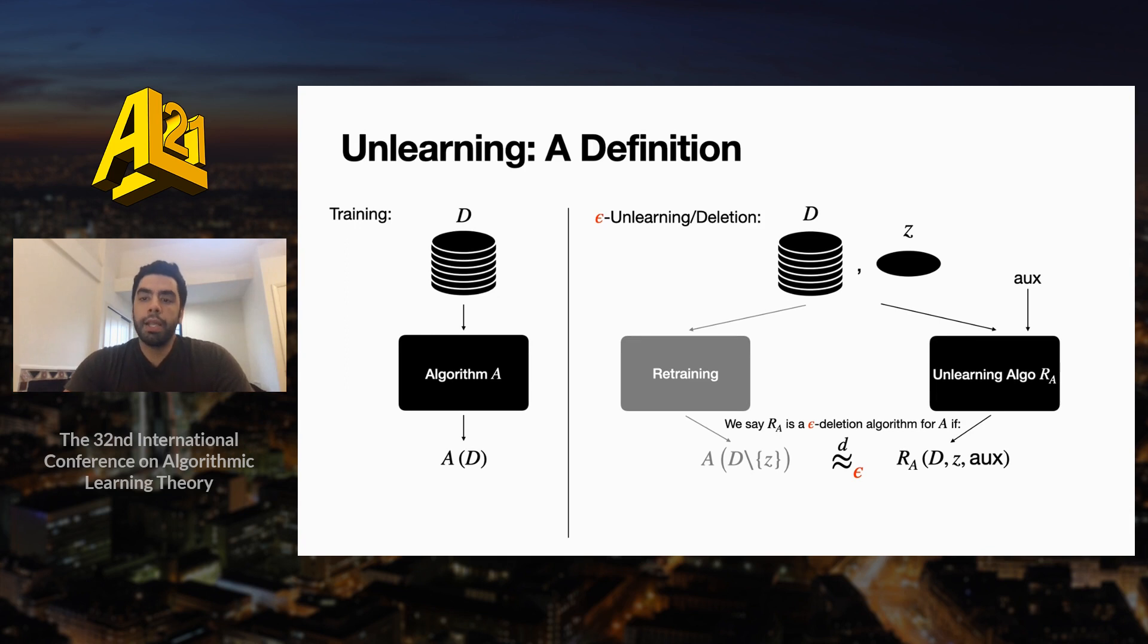We can further relax this definition and ask for epsilon unlearning, which requires that those two distributions—one is the output distribution of the deletion algorithm, and another is the output distribution of retraining—are epsilon close to each other in a differential privacy sense. This means that the distributions are within the multiplicative factor of e^epsilon of each other. Obviously the smaller the epsilon, the stronger our deletion guarantee will be. I want to quickly mention that in all our algorithms, we will use the Gaussian mechanism of differential privacy to guarantee epsilon unlearning.